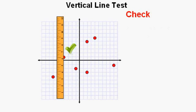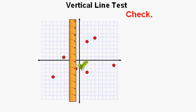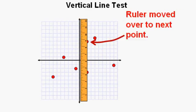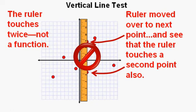We go to the next point to the right and see that the graph only touches the ruler once. Again, check. And we move the ruler over to the next point and see that the ruler touches another point, a second point as well.